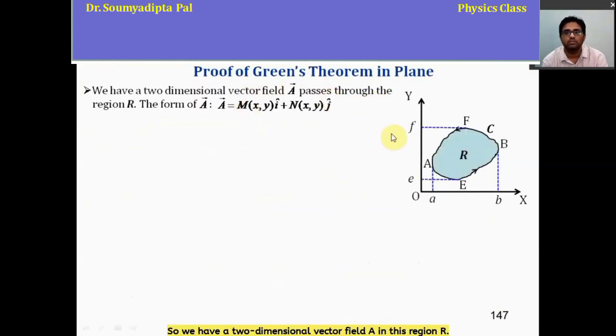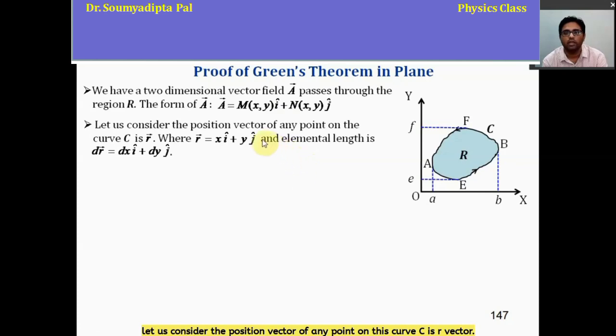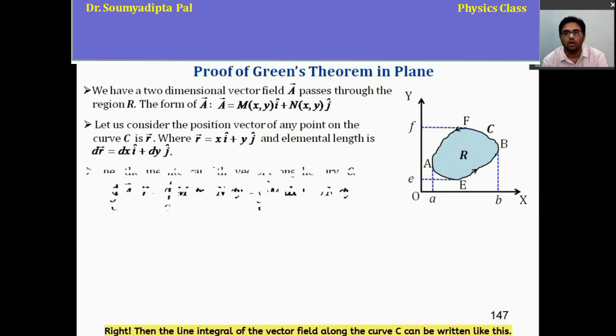We have a two-dimensional vector field A in this region R. And the form of the vector field is m i plus n j. Now, let us consider the position vector of any point on this curve C is R vector. And R vector is x i cap plus y j cap. And an elemental length of this curve is dr vector, which is dx i cap plus dy j cap. Then the line integral of the vector field along the curve C can be written like this.